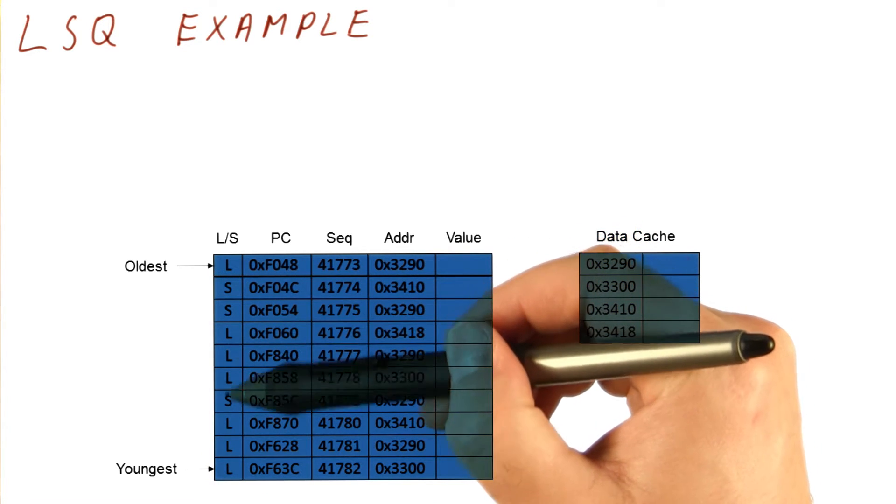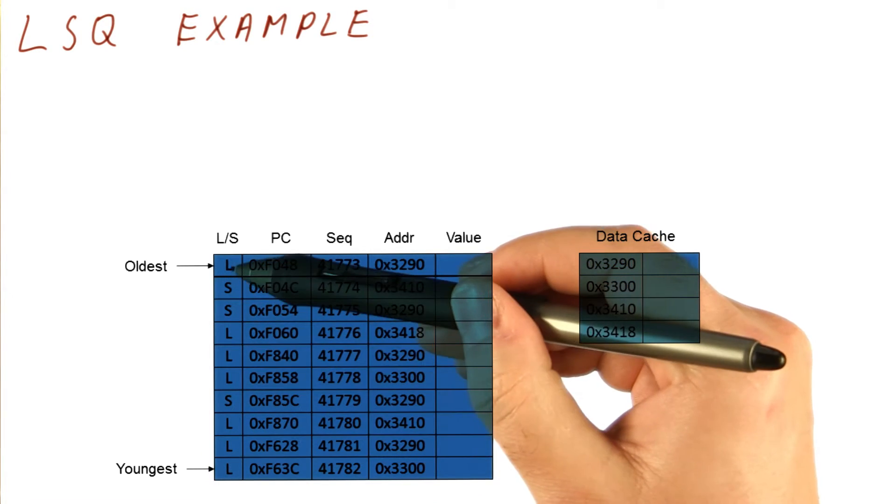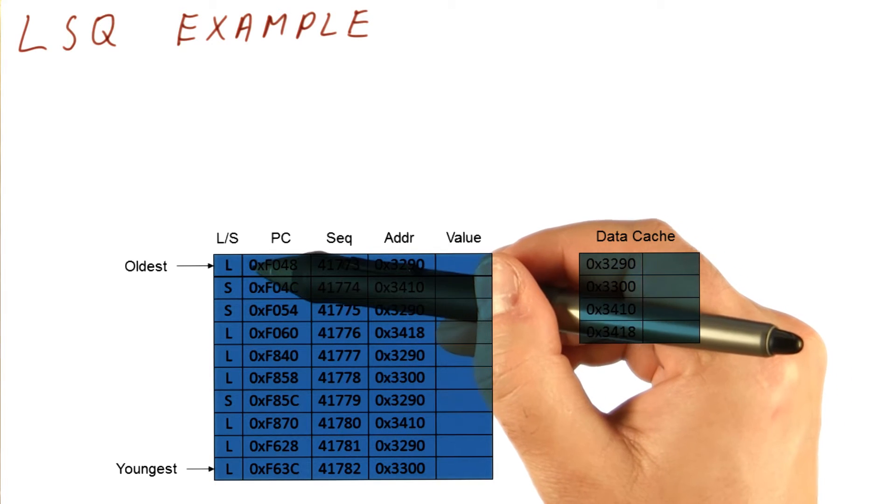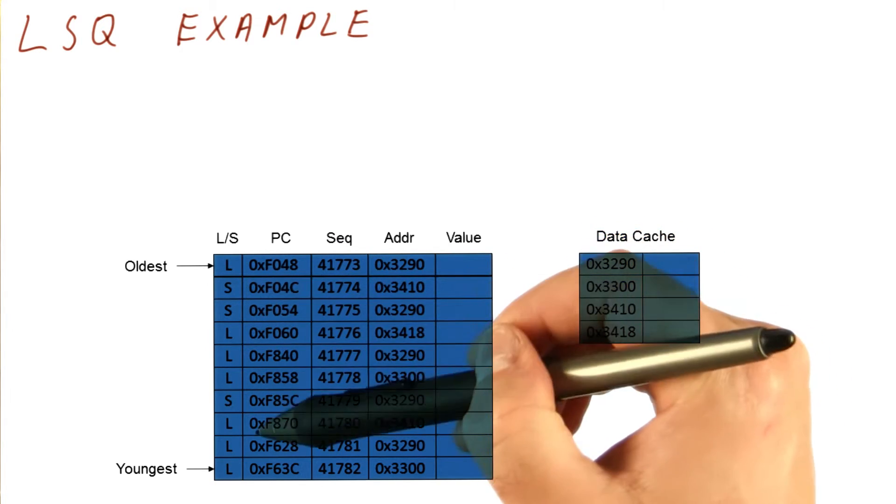Note that the queue is storing instructions in the correct program order. So basically, in program order, this was the first load, this was the second instruction, and so on.